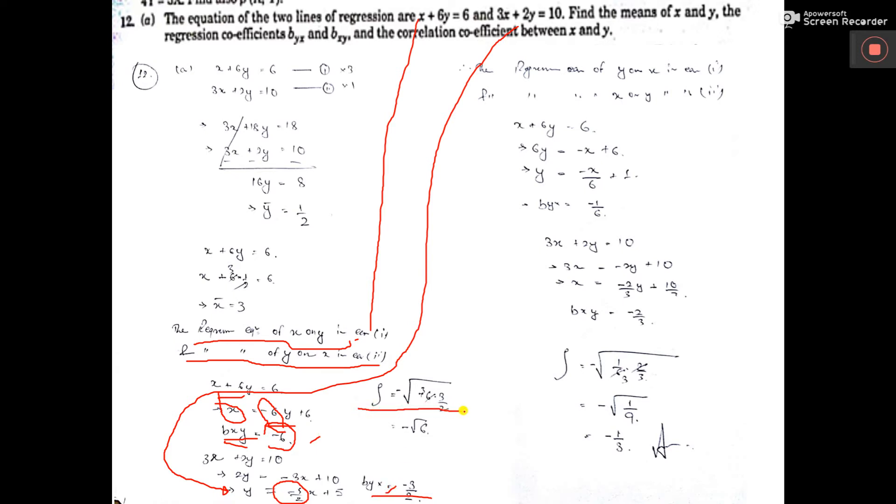Rho formula we know. Rho is equal to bxy into byx. So, put the value of bxy and byx. See here, both are minus. So, one minus sign will come front. Minus root over 6, it is coming. Now, root over 6 means what? 2.043. So, 2 point something. Minus 2 point something, it will come. But, rho lies between 1 and minus 1. So, this minus 2, it cannot be. So, it is cross.